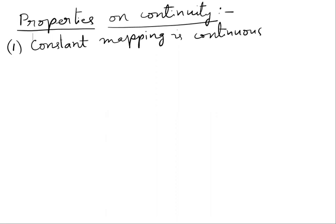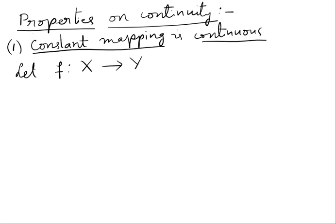First one: constant mapping is continuous. We have to prove constant mapping is continuous. Let us take a constant mapping, f from x to y, a constant mapping or function.